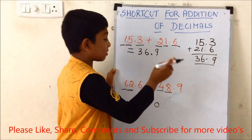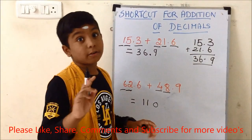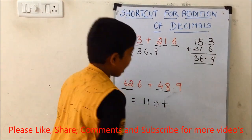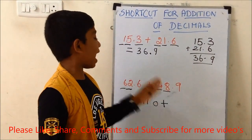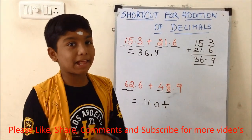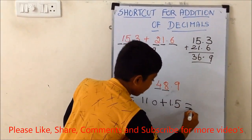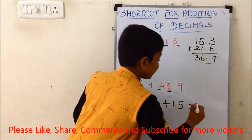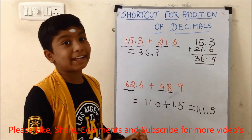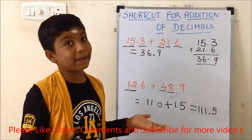Here comes the important trick. We need to add 6 plus 9. 6 plus 9 is 15. Now we should not put the decimal point — we need to put plus. We are adding the decimals, so we need to convert 15 as a decimal: that is 1.5. Write 1.5. Now we add: 111 plus 1.5. The answer is 111.5. See how easily and simply we got the answer — how amazing it is!